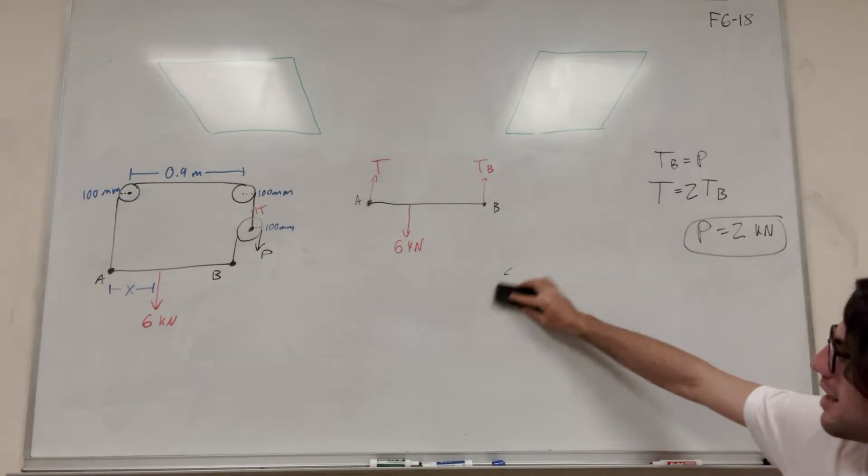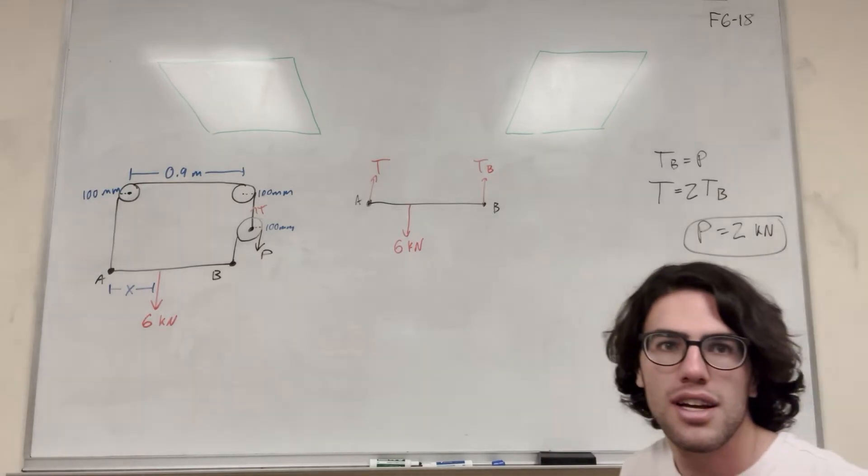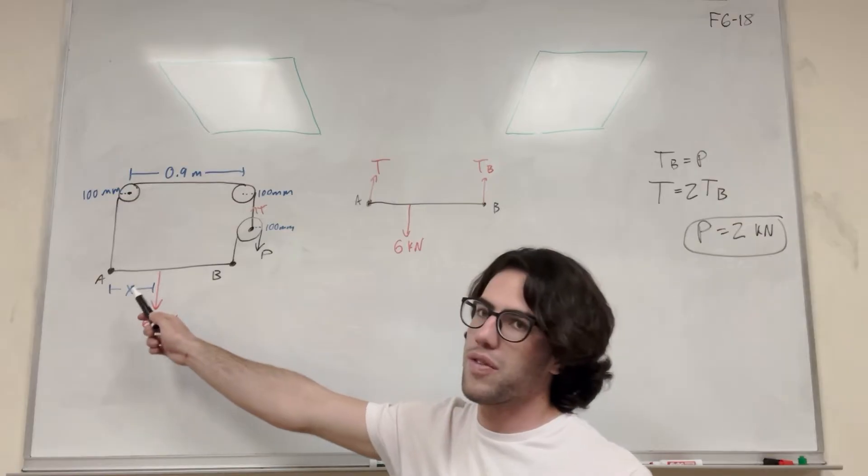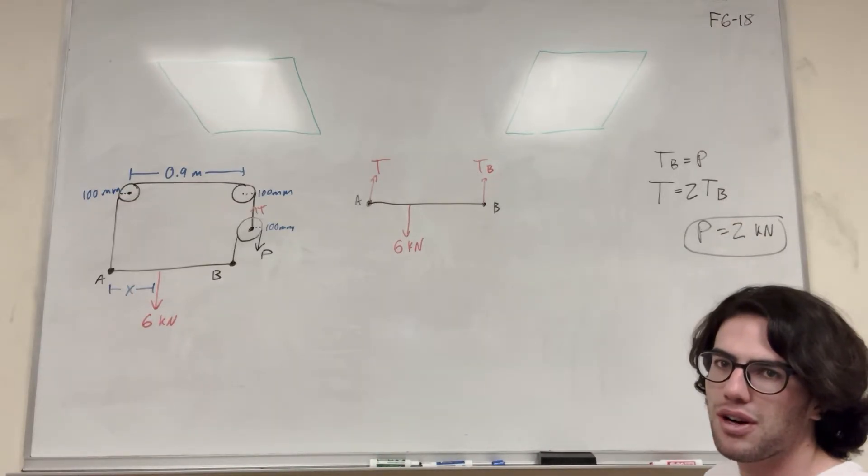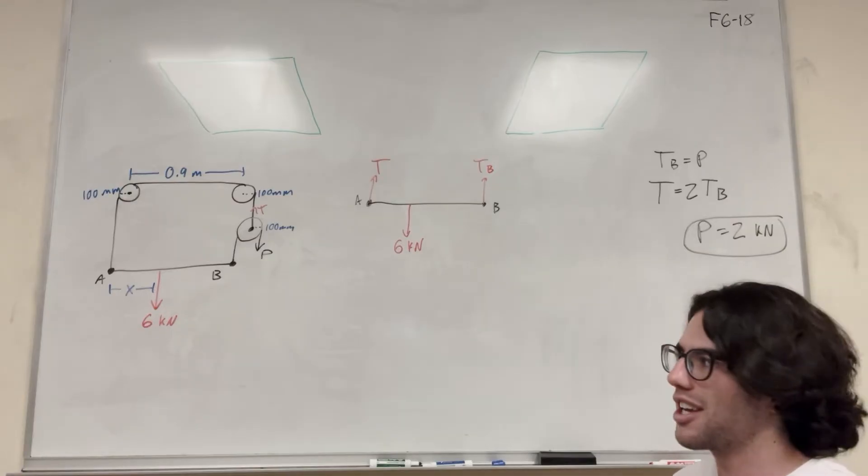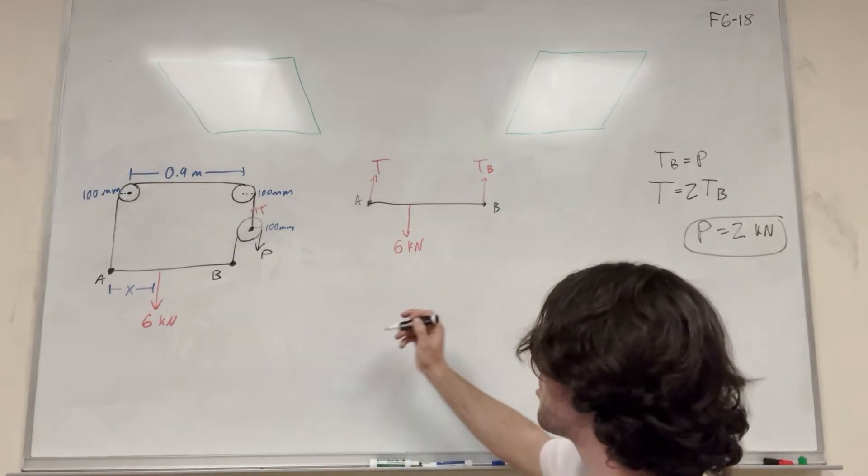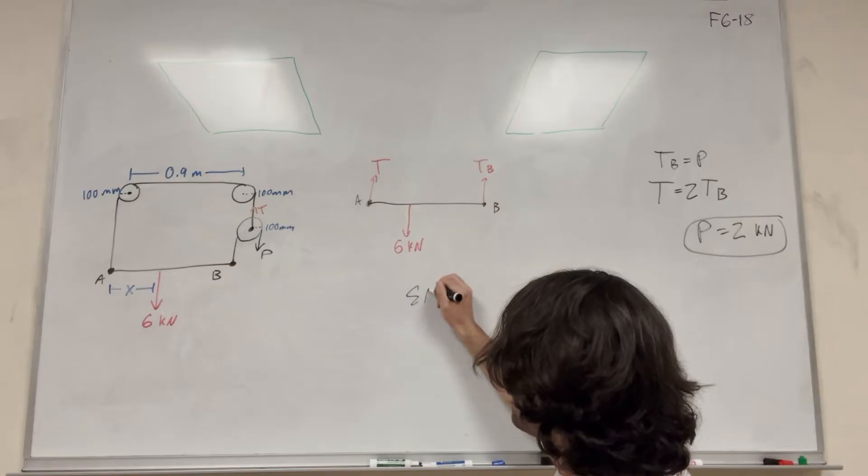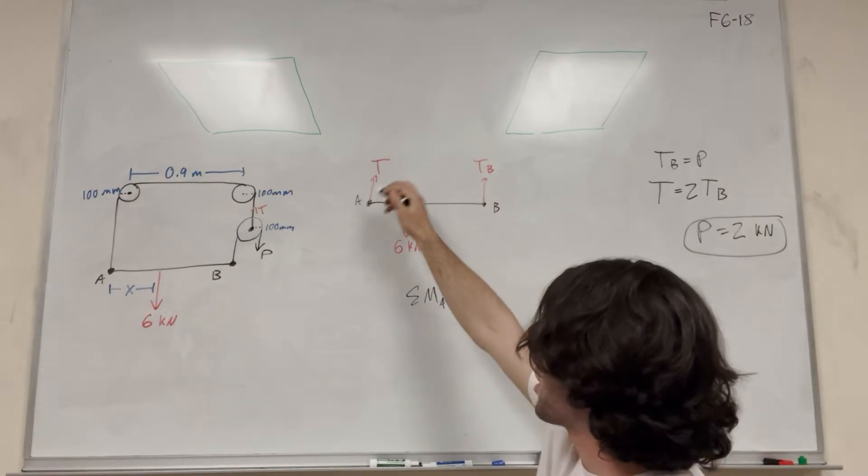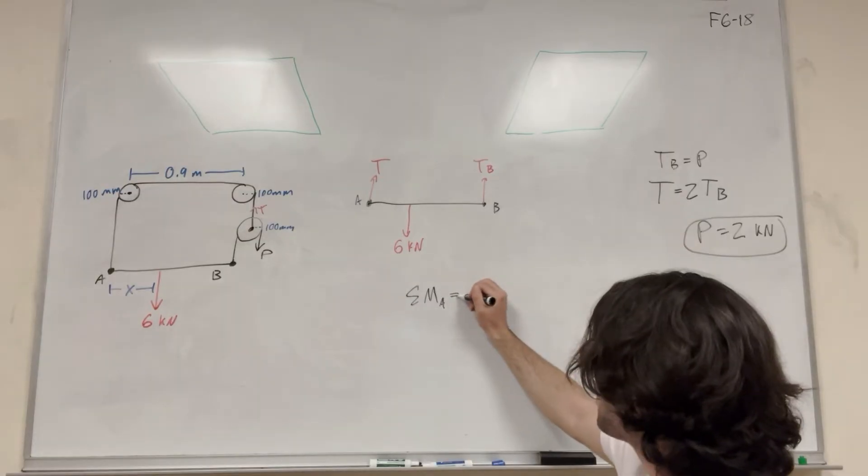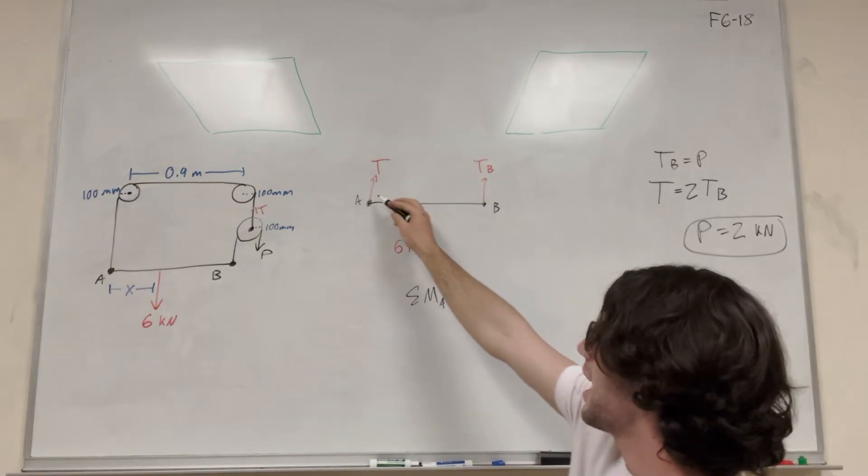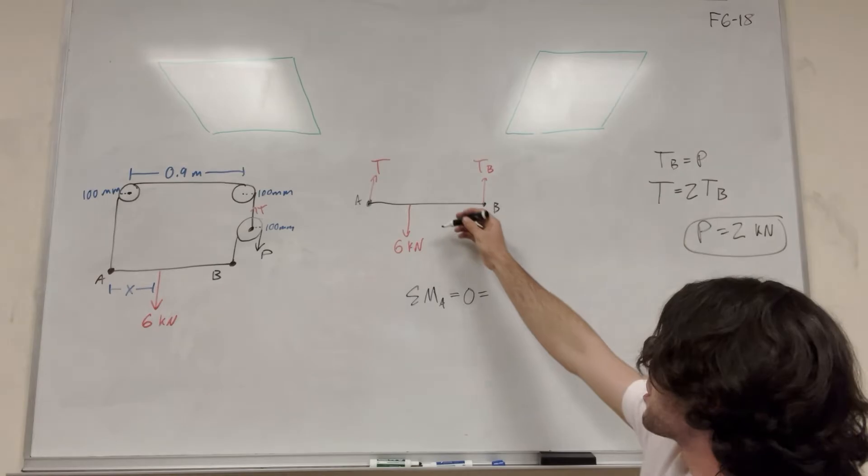And now we want to find the distance that x needs to be. So that's part B, because we're going to find this distance of x in order for it to stay flat. So if you're finding distance, usually you want to do moments, right? The moment has distance in the equation. So let's take sum of the moments around A. And we're just looking at this free body diagram that we drew of just AB. You know that sum of the moments is equal to 0, and we're looking at A, so T is not there. So it's going to be, this is distance x.